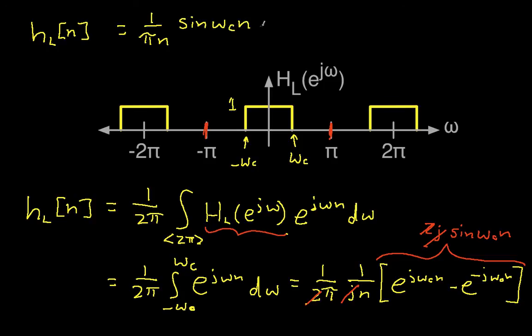And now I'm going to do one last step, which may seem kind of pointless, and do some rearranging. I'm going to multiply top and bottom by omega c, and then write this as omega c over pi sin omega c n over omega c n. The reason for doing that is that this function here shows up often enough it's got its own special name: it's sinc of omega c n. So my final result then is that the impulse response of the ideal low-pass filter is omega c over pi times this sinc function.